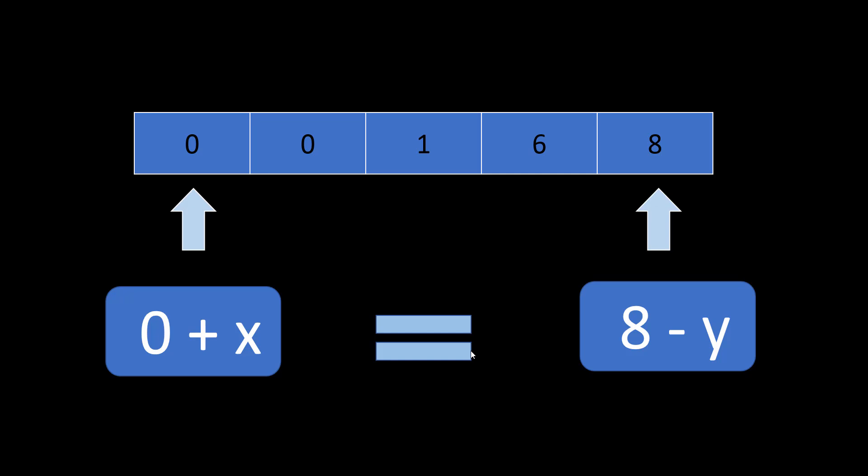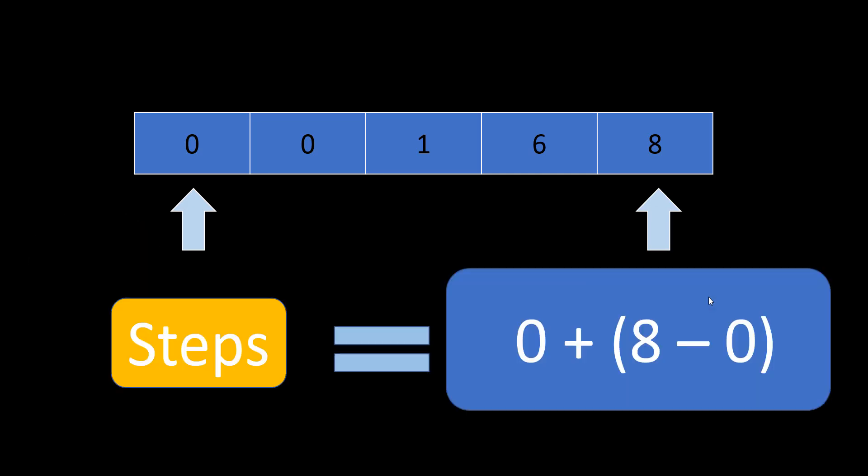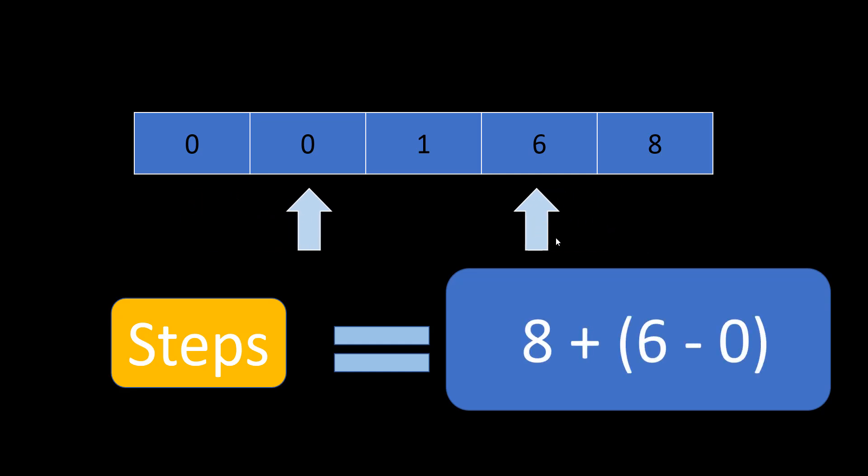So what we are effectively doing here is we are taking x number of steps for 0 and y number of steps for 8 to make them equal. So how do you find the values? Do you need to find the value for x and y? No, you just need to find the value for x plus y. So we'll just shift these variables here and there to make it y plus x equal to 8 minus 0. So the difference or the number of steps in order to make these two elements equal is nothing but the difference between these which is 8 minus 0 and this y plus x is nothing but the steps.